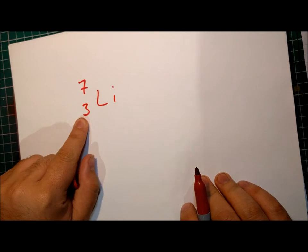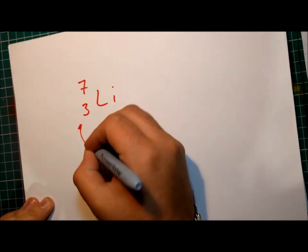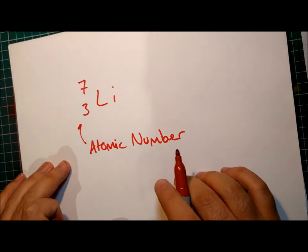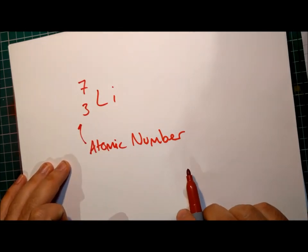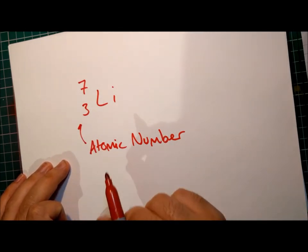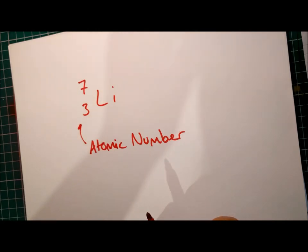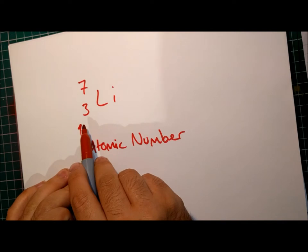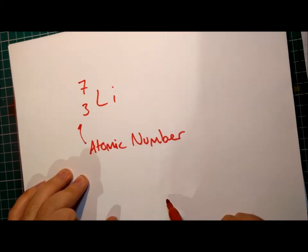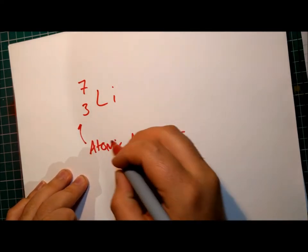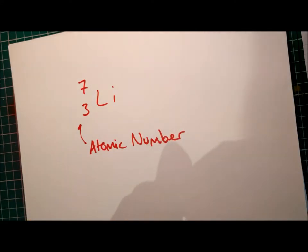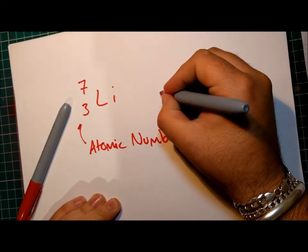Now this 3 is called the atomic number, and it is vital. That is the identity of lithium. This 3 here tells you how many protons that particular element has, and in this case it's 3. Any atom that has 3 protons is going to be lithium. So that 3 tells us that we have our 3 protons. Let's draw that here.